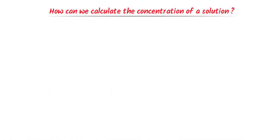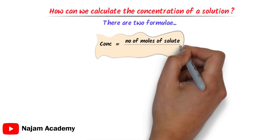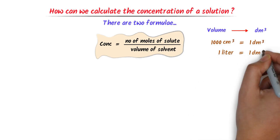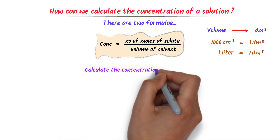Now I will teach you how to calculate the concentration of a solution. We can calculate it using two formulas. The first formula is: concentration = number of moles of solute ÷ volume of solvent or solution. Remember that volume is always expressed in dm³ — for instance, 1000 cm³ equals 1 dm³, or 1 liter equals 1 dm³.